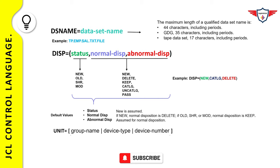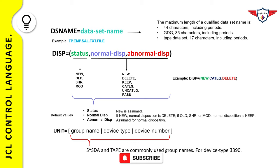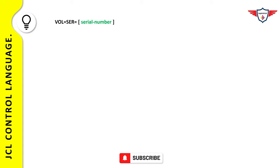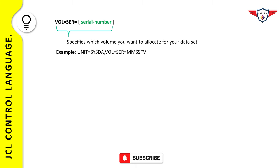The UNIT parameter specifies the tape or disk device where the dataset resides. If the dataset is already cataloged, you are not required to specify the UNIT parameter. For allocation, you typically use SYSDA or TAPE, or a specific device number. The VOL=SER parameter specifies the volume serial number where you want to allocate your dataset — for example, UNIT=SYSDA, VOL=SER=MMS9TV.